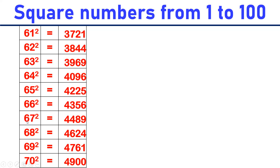67 square is equal to 4,489. 68 square is equal to 4,624. 69 square is equal to 4,761. 70 square is equal to 4,900.